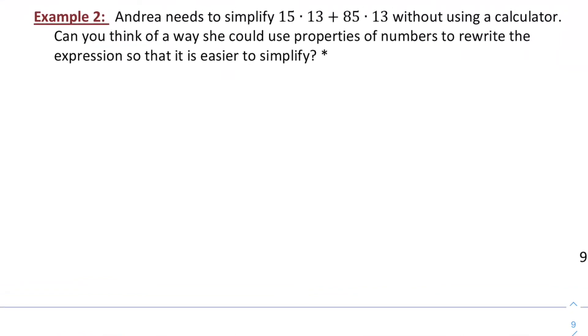We can use some of our properties to simplify without using a calculator. So if you notice these both have a factor of 13, I could factor that out and rewrite that as 13 times the quantity 15 plus 85. So that's really the distributive property, maybe backwards of what you're used to seeing it written as.